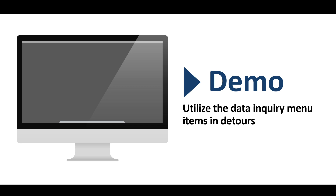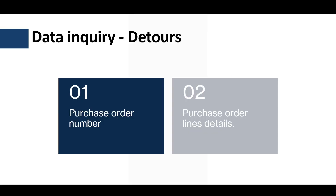Now let's review another quick demo on how to utilize the Data Inquiry menu items in detours. In this demo, I'm going to define two detours to help users identify the required information in the Purchase Order Receiving flow — the first to show purchase orders either by vendor name or purchase orders of today, and the second to show order line details so users can select which item or line number to receive.